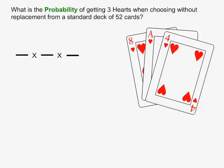In this example, what is the probability of getting three hearts when choosing without replacement from a standard deck of 52 cards? There are three events involved in getting three hearts, so we put three fraction lines with multiplication symbols between them.